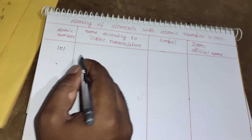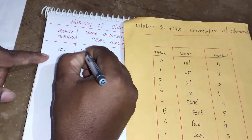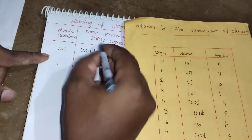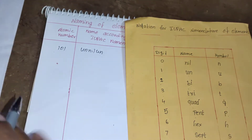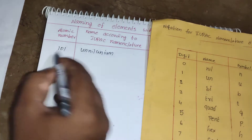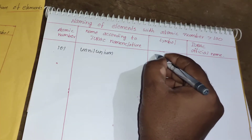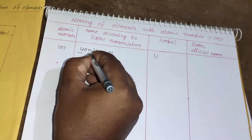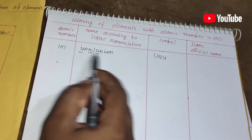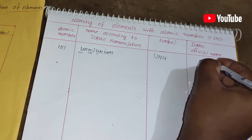For element 101: 1 = un, 0 = nil, 1 = un, and we add '-ium' at the end, giving the name Ununnilium — wait, Un-nil-un-ium. The symbol is Unu. The IUPAC official name for element 101 is Mendelevium, but the recent IUPAC systematic recommended name is Unnilunium.